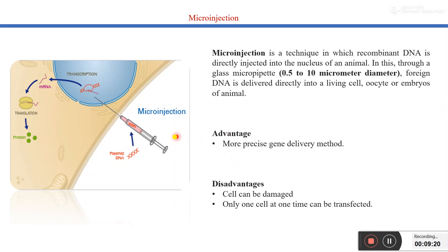Through micro injection, you can directly inject your gene of interest into the nucleus of the cell or into other intracellular spaces like mitochondria or chloroplast. However, it also has disadvantages: it can cause damage to the cell, and it is less efficient because only one cell at a time can be transfected. That is why it is considered a less efficient method of gene transfer.